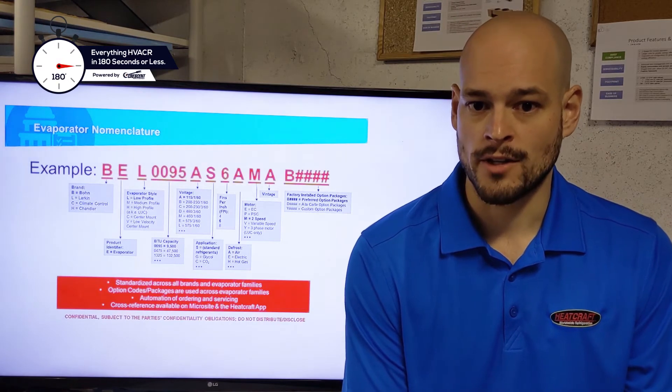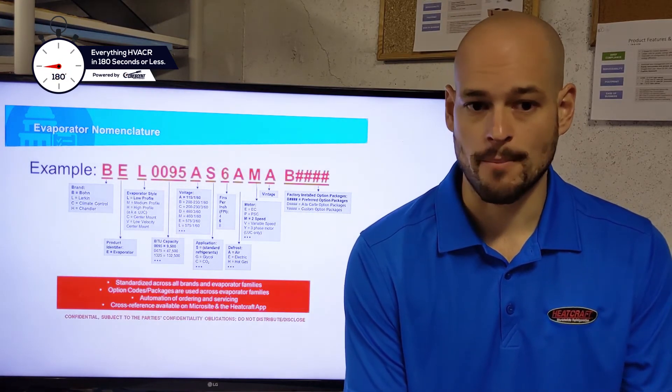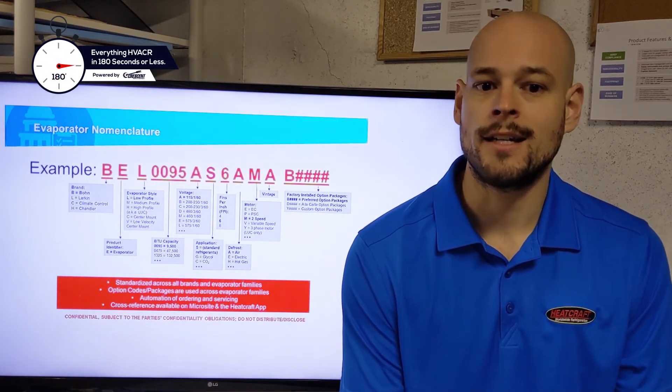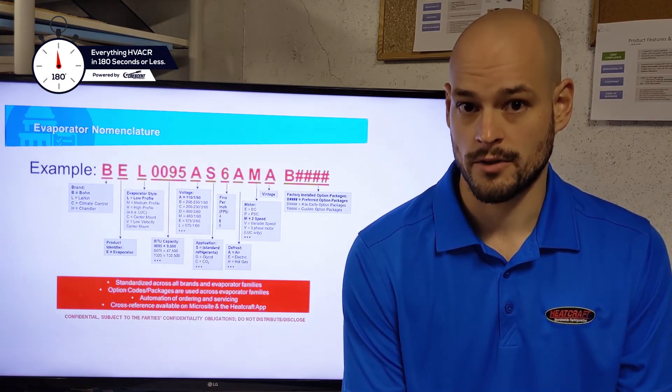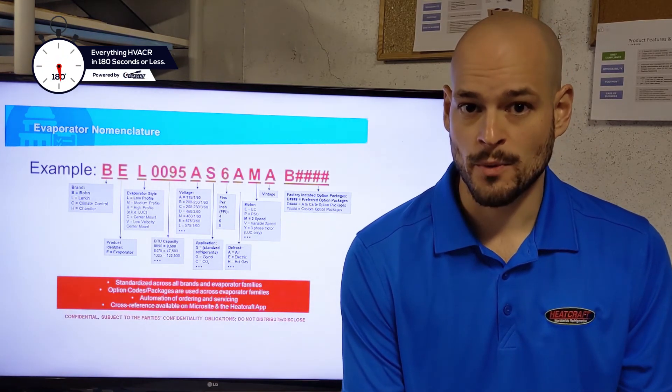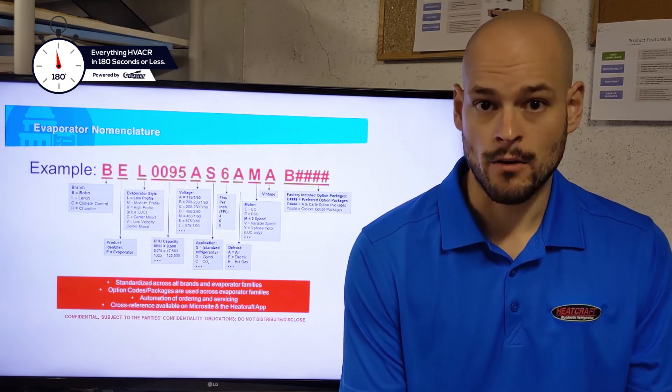Your next codes are going to be your factory installed option package. Just the base model we build, the base BEL-0095, is going to be a B0000. If you want to add any options from the factory, you're going to change the B code. For example, if you want to add intelligence,